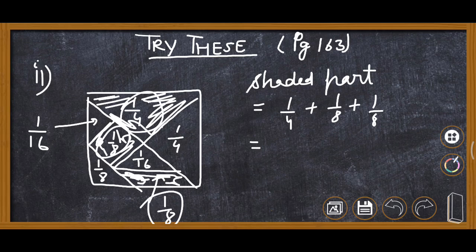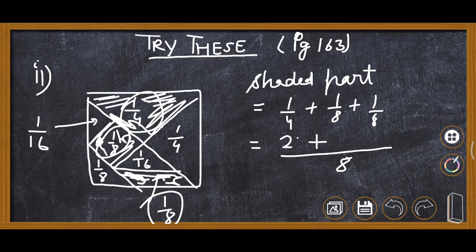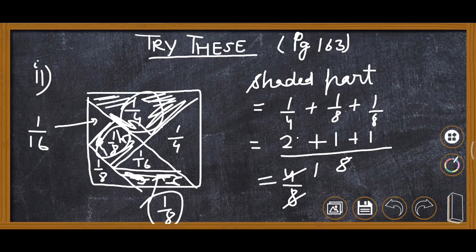We will add these parts. The LCM is 8. So 1 times 2 plus 1 plus 1 equals 4 upon 8, and when we reduce it, it is 1 upon 2.